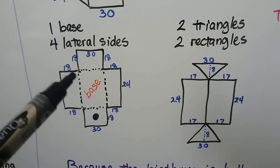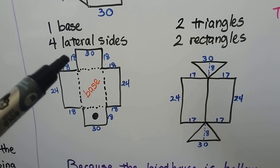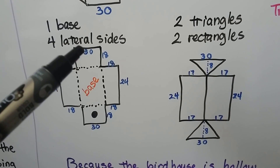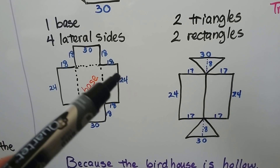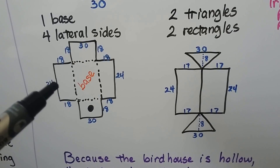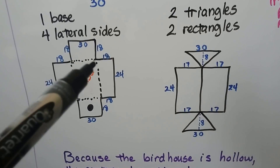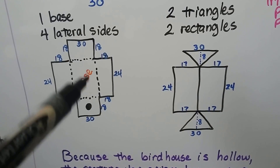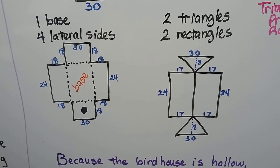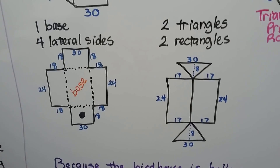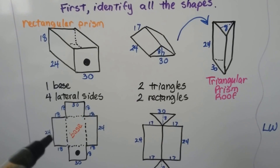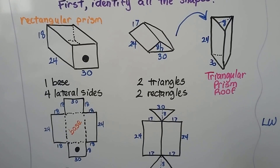Technically we could take each face separately and calculate: 18 times 30, 18 times 24, 18 times 30, 18 times 24. We know this is 30 across and 24 down, and there's one base at 30 times 24. We could add all of those up, but that would take a while. There's a much quicker way — we can just find the surface area of a rectangular solid using a formula.